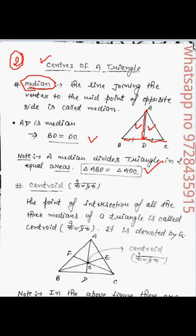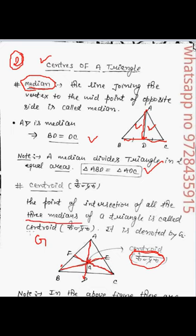A point where all the three medians of a triangle meet is called the centroid. In notation it is denoted by G — the point of intersection of all three medians of the triangle is called the centroid.